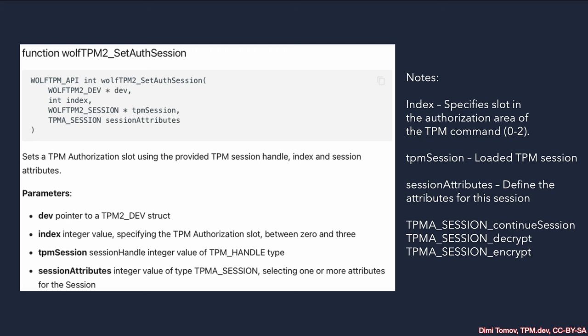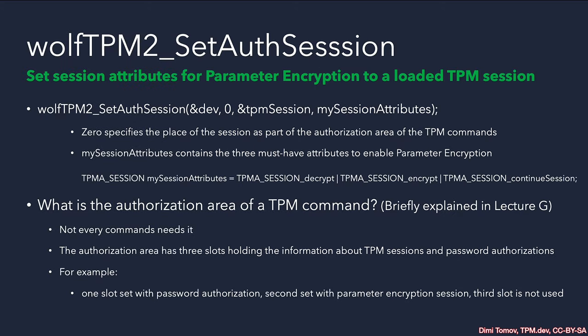TPM commands have mandatory fields such as the TPM tag, the command size, and the command code. The command code is a numerical expression of the TPM command — like an opcode — so the TPM knows which command to execute. In human-readable form, these come as API names or TPM2 tool commands.